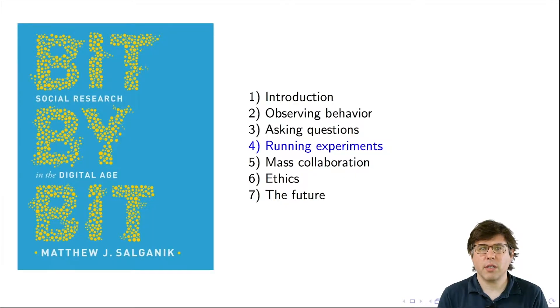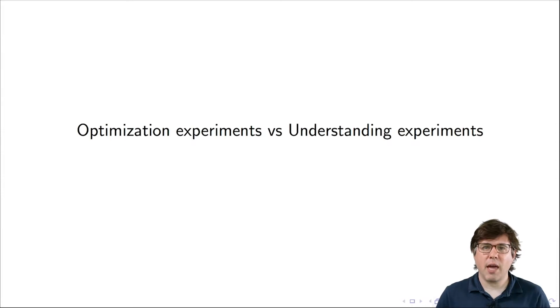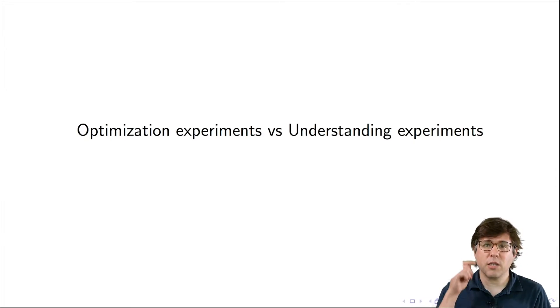Hi, welcome back to this series of videos about experiments in the digital age. This is the second video in a series of five. It covers material included in chapter four of Bit by Bit. In many ways, experiments are incredibly prevalent in the digital age, often in the form of A-B tests that are run by websites. I want to draw a distinction between these kinds of A-B tests and the kinds of experiments that social scientists traditionally run.